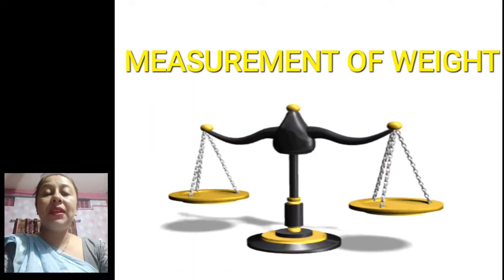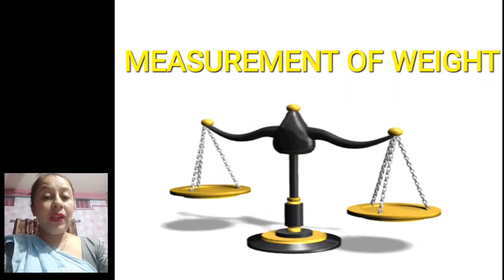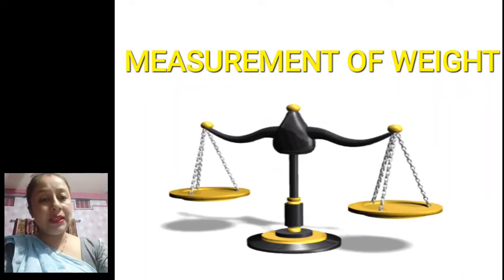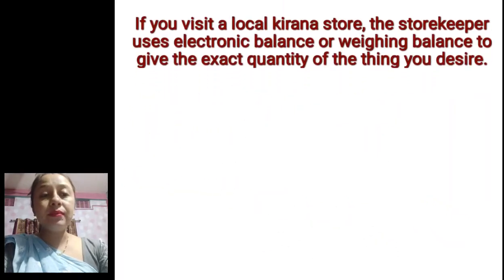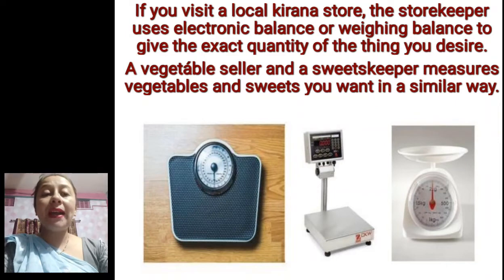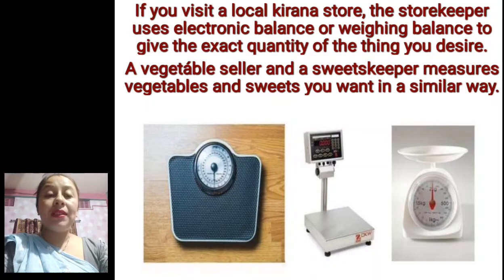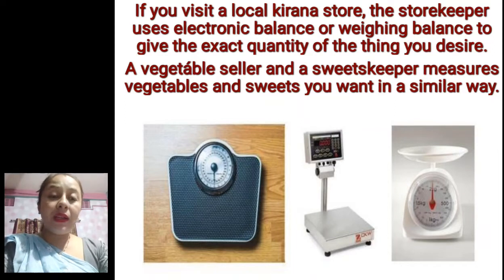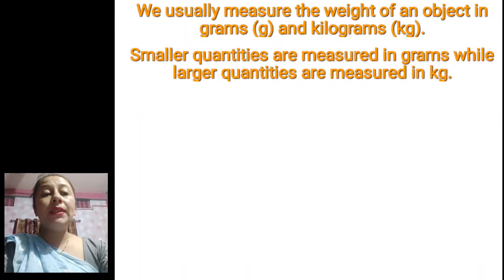Next topic is measurement of weight. I know most of you know your weight — it may vary from 20 kg to 30 kg. If you visit a local Kirana store, the storekeeper uses an electronic balance or wing balance to give the exact quantity of the thing you want. The vegetable seller and a sweetkeeper measure vegetables and sweets in a similar way — it may be an electronic or manual device, but they will measure and give you what you want. We usually measure the weight of an object in grams.